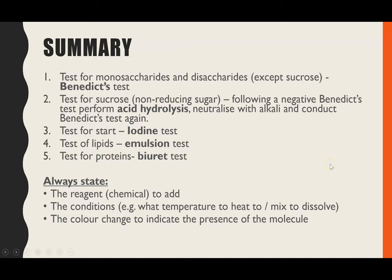In summary: the test for monosaccharides and disaccharides — except sucrose — is the Benedict's test. For sucrose, the non-reducing sugar, you first get a negative Benedict's test, then perform acid hydrolysis by boiling in acid, neutralise with an alkali, and heat with Benedict's again to observe the colour change. The test for starch is the iodine test, for lipids it's the emulsion test, and for proteins it's the biuret test. In an exam, always state the reagent, the conditions — whether you heat, boil, or mix to dissolve — and the colour change, including both the starting colour and the positive result colour.